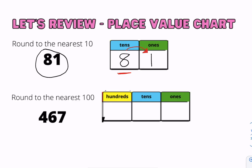Once you look at your next door neighbor, which is the number 1, we notice that the number 1 is not 5 or more — it is 4 or less. So 81 rounds to 80.